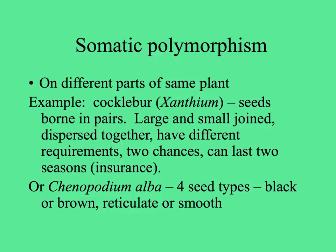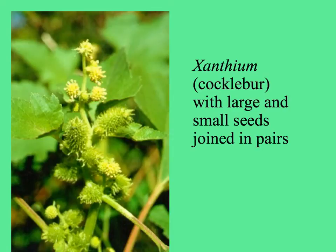Some plants have different seeds depending on which part of the plant they're from. The cocklebur, something like the sea rocket, has a large and a small seed joined, and both are mature and dispersed at the same time but may have different requirements for germination. Chenopodium album has four seed types — the seeds could be black or brown, reticulate or smooth. Here's the cocklebur, Xanthium, with the large and small seeds joined in pairs; at the top of the plant you can see the flowers, lower down the fruits.